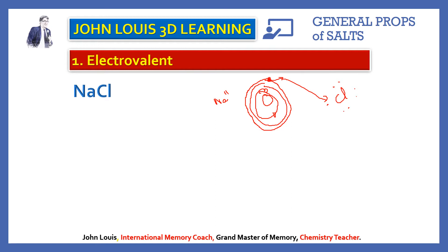One atom donates and the other accepts. Another example of electrovalent compounds is magnesium oxide — magnesium oxide is formed by an electrovalent bond. And CaBr2, calcium bromide, which we studied in chemical bonding.